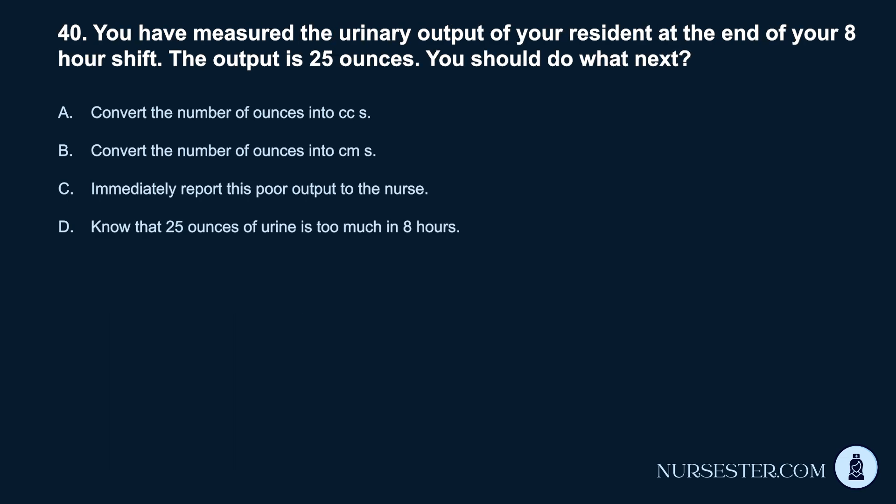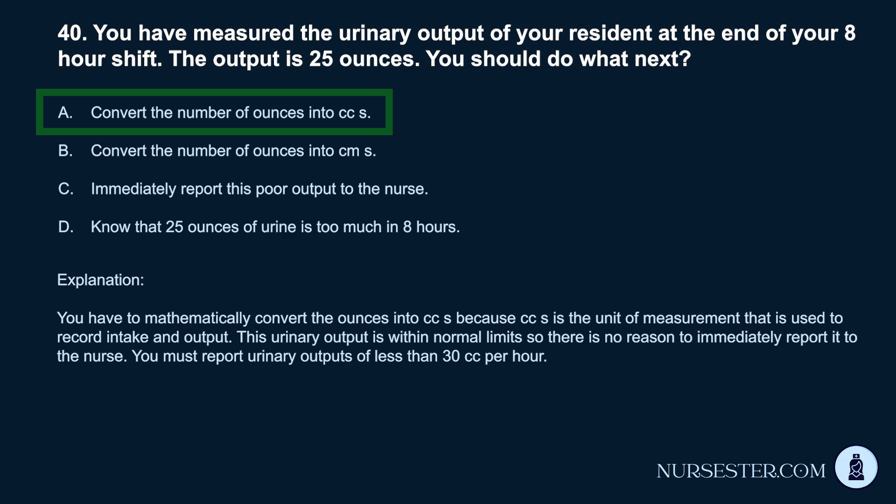Question 40. You have measured the urinary output of your resident at the end of your 8-hour shift. The output is 25 ounces. You should do what next? a. Convert the number of ounces into CCs. b. Convert the number of ounces into CMs. c. Immediately report this poor output to the nurse. d. Know that 25 ounces of urine is too much in 8 hours. Correct answer: a. Convert the number of ounces into CCs, because CCs are the unit of measurement used to record intake and output. This urinary output is within normal limits, so there is no reason to immediately report it. You must report urinary outputs of less than 30 cubic centimeters per hour.